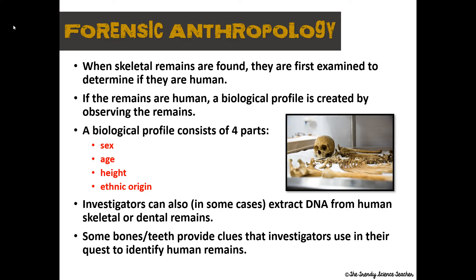When skeletal remains are found, they're first observed and examined to determine if they are in fact human remains. If they are, a biological profile is created. There is some controversy around this, which we'll get into in future lessons, but for the most part the biological profile has four components: the sex of the person, the age, the height, and the ethnic origin. Investigators can also in some cases extract DNA from skeletal or even dental remains, which is helpful in an investigation, as some bones and teeth provide extra clues in the quest to identify human remains.